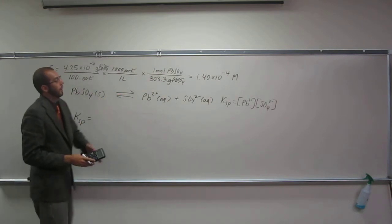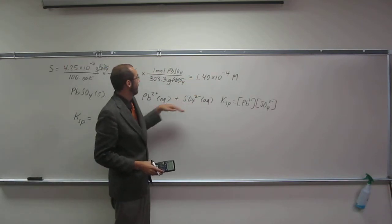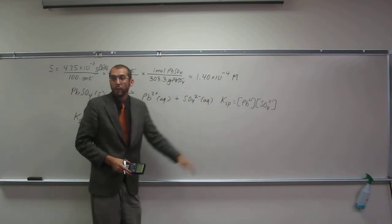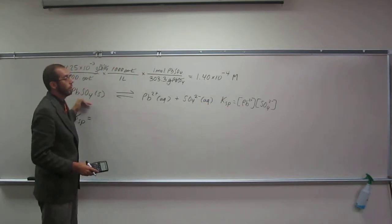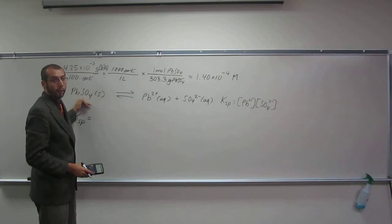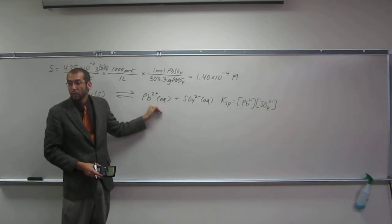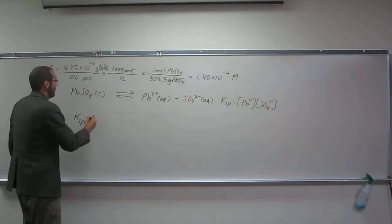Ksp equals the concentration of lead-2 times the concentration of sulfate. If this is 1.40 times 10 to the negative 4 molar, then both concentrations equal this.